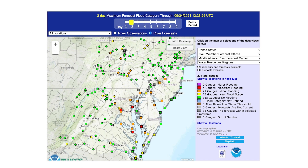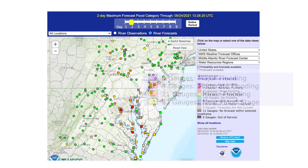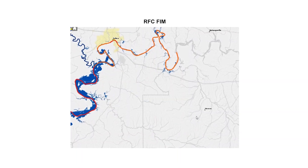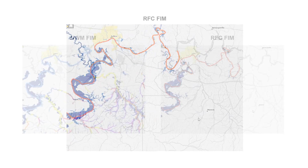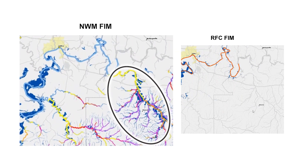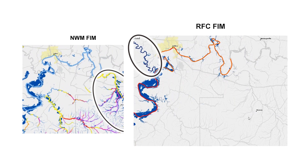The RFC FEM is available for any official river forecast point which is at or forecast to be at or above action stage. Potential inconsistency between RFC FEM and other NWM visualizations exists. For example, the NWM flow forecast may trigger inundation in one area, but the RFC flow forecast may trigger inundation in a different area.